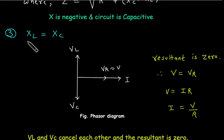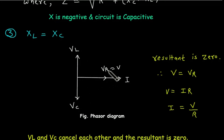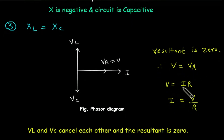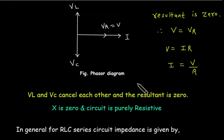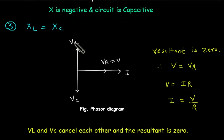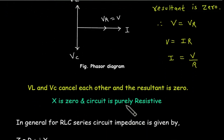For the third condition, when XL is equal to Xc, VL is equal to Vc — that is, the voltage drop across the inductor equals the voltage drop across the capacitor. Vr will be in phase with the current and the resultant of VL and Vc is zero, so V equals Vr, which equals I into R. Therefore I = V/R. VL and Vc cancel each other, and when XL equals Xc, X is zero and the circuit is purely resistive.